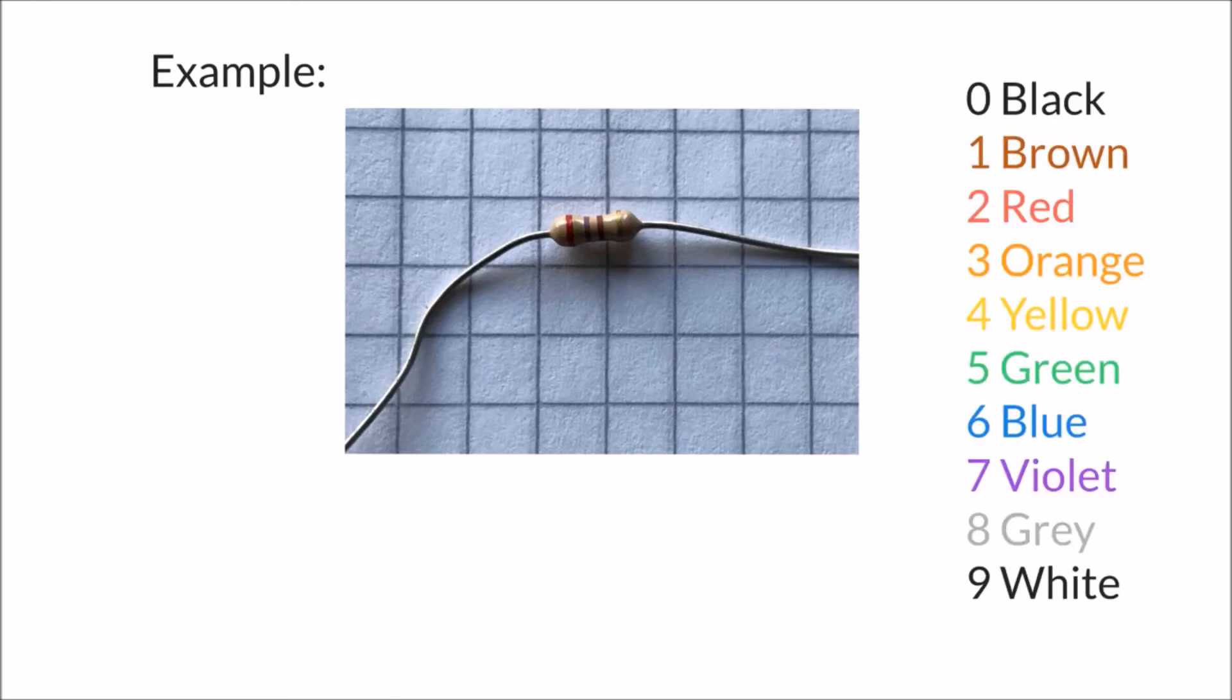We see our color code again down here on the right hand side. The first band in this case is a red band, and we know that the first band tells us the first digit of whatever value we're trying to find. So I know that the first band's red which corresponds with the number 2, so the first digit of our resistor value is a 2. The second band is a violet band - it might be difficult to make out in that photograph - but violet corresponds with the number 7. So I know that the second band being violet gives us a second digit of 7.